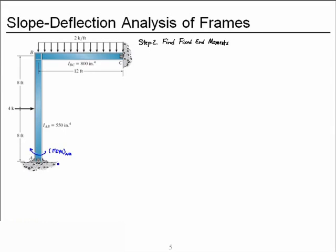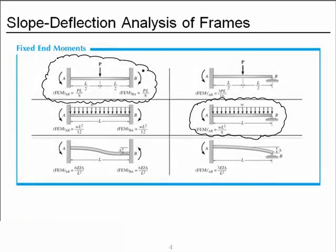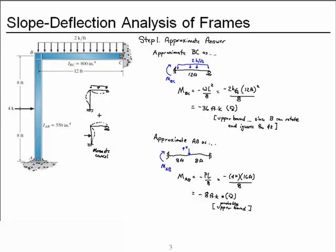Because we have a fixed support at A, we'll get a fixed-end moment AB. Since we have a continuous member or equivalently a fixed joint, we'll have a fixed-end moment at the other end of each member. But since C is a pin, there'll be no fixed-end moment there. So we're going to calculate the fixed-end moment for AB first. We have a beam that is fixed-fixed with a point load in the middle, giving the PL/8 value.